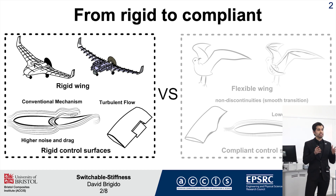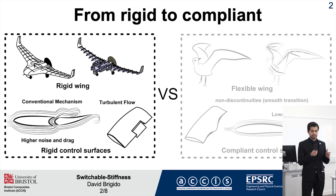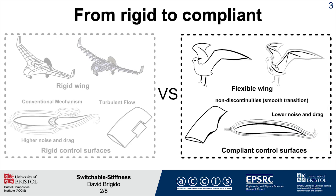One way to solve this problem is using morphing structures. Morphing is inspired by nature, especially flying animals. These types of animals have supple and elastic wings, and they don't have any discontinuity along the wing, so that favors a smooth transition in the flow.